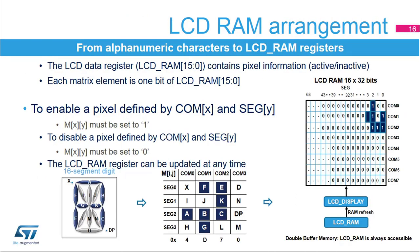The LCD pixels are individually controlled by setting or clearing the corresponding bits of the LCD data register. The STM32L4, which can control LCD displays with up to 8 common terminals and up to 44 segment terminals to drive 176 (44x4) or 320 (40x8) LCD pixels, uses LCD RAM data registers made up of 16x32 bits — two 32-bit words per COM. To make LCD software efficient and to optimize LCD alphanumeric coding, we use a matrix. Each matrix element corresponds to one bit of the LCD RAM register at a ratio of 15 to 0.